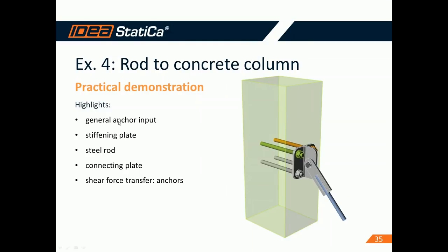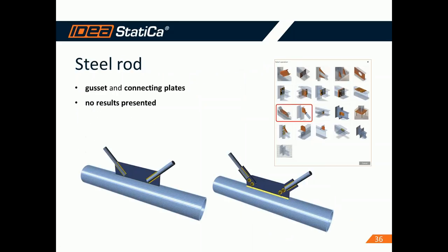Now we have the last example — a rod anchored to a concrete column. Highlights include: general anchor input, stiffening plate, a special member called 'steel rod', work with a connecting plate, and shear force transfer switched to the anchors option. Before we start, let me explain the special steel rod member, which has been implemented since version 8 and can be used in gusset plate or connecting plate operations. Keep in mind that this member is not checked in IDEA StatiCa — you have to check it in your 3D global model.